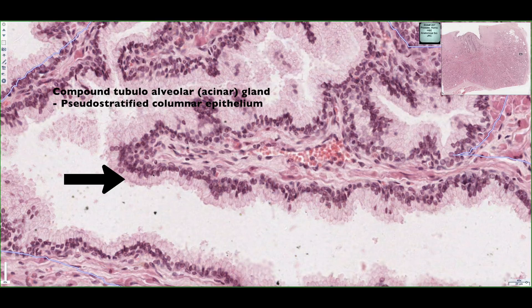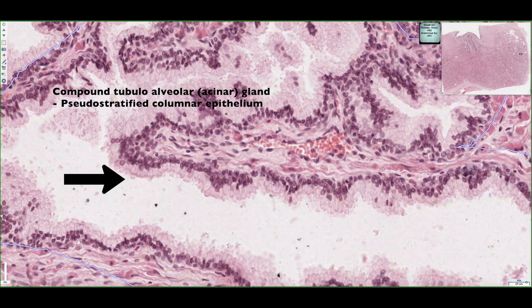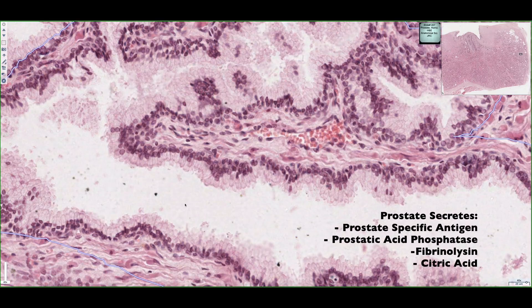The secretory cells are pseudostratified columnar epithelium, with nice basal cells and apical segments that stain palely. They secrete a whole bunch of products, but the main products typically secreted by the prostate are prostate-specific antigen, prostatic acid phosphatase, fibrinolysin, and citric acid.